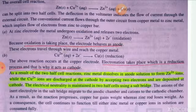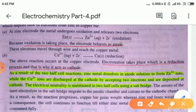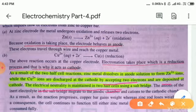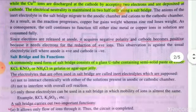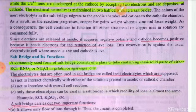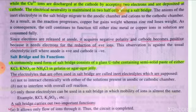As a result of the two half-cell reactions, zinc metal dissolves in the anode solution to form zinc ions, while copper ions are discharged at the cathode by accepting two electrons and are deposited at the cathode. The electrical neutrality is maintained in the two half-cells using the salt bridge. Since electrons are released at the anode, it acquires negative polarity, and the cathode becomes positive because it needs electrons for the reduction of positive ions. This is opposite to electrolytic cells, where anode is positive and cathode is negative.